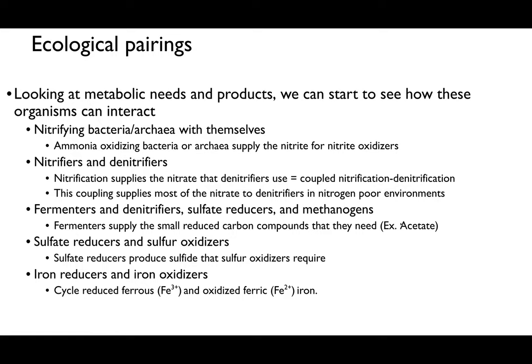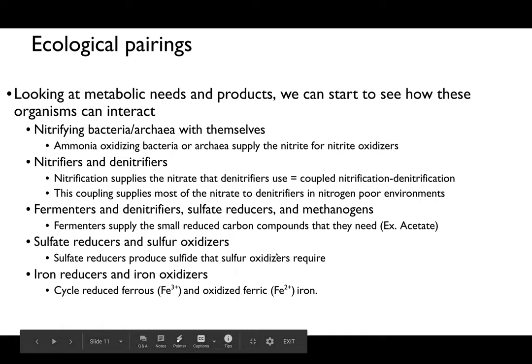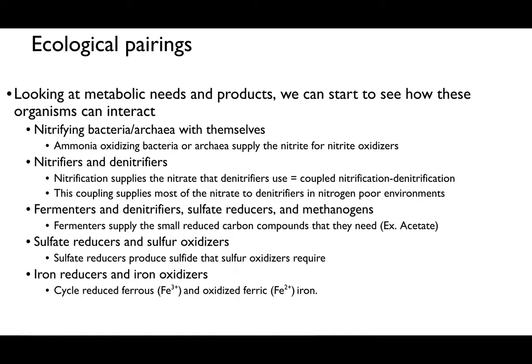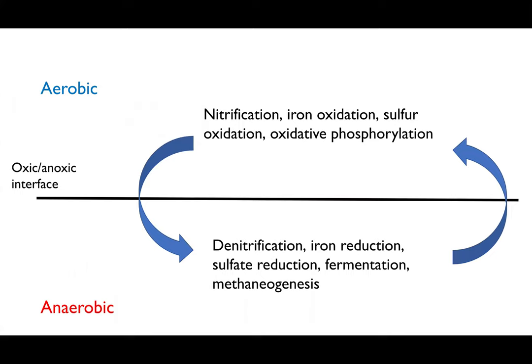We also see pairings of fermenters with sulfate reducers and methanogens — fermenters supply small reduced carbon compounds, principally acetate, to denitrifiers, sulfate reducers, and methanogens. There are sulfate reducers paired with sulfur oxidizers, where sulfate reducers produce sulfide that sulfur oxidizers then use in their metabolism. Finally, iron reducers and iron oxidizers cycle ferrous iron between Fe3+ and Fe2+. These metabolic pairings occur in nature and also within your gut.